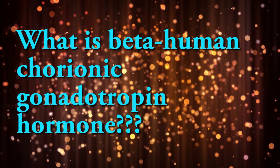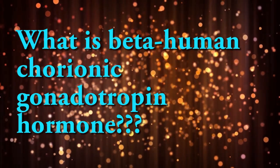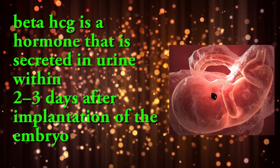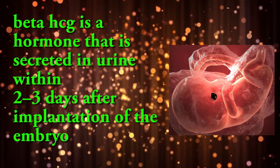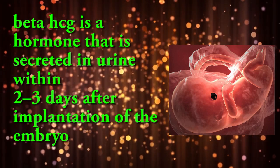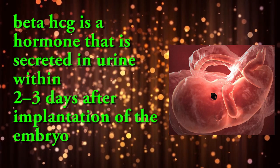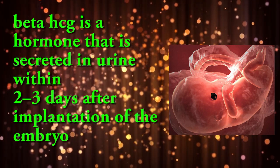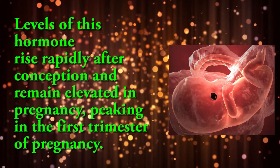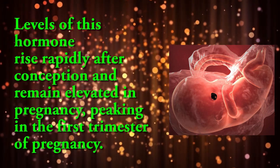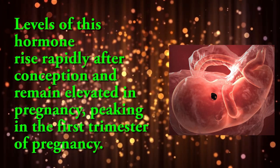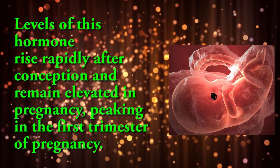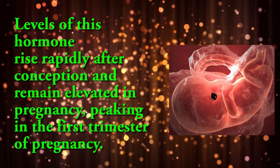Beta-hCG is a hormone that is secreted in urine within two to three days after implantation of the embryo. Levels of this hormone rise rapidly after conception and remain elevated throughout pregnancy.